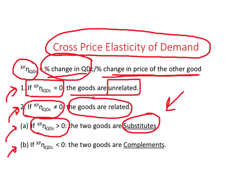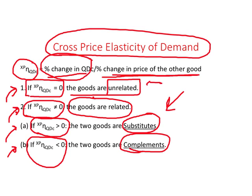If cross price elasticity of demand is a negative number, the two goods are complements. For instance, if the price of sugar increases and you drink sweet coffee, your demand for coffee will decrease, because you need to buy sugar along with coffee. So what we should remember about cross price elasticity of demand is whether goods are related or not, and if they are related, whether they are substitutes or complements.